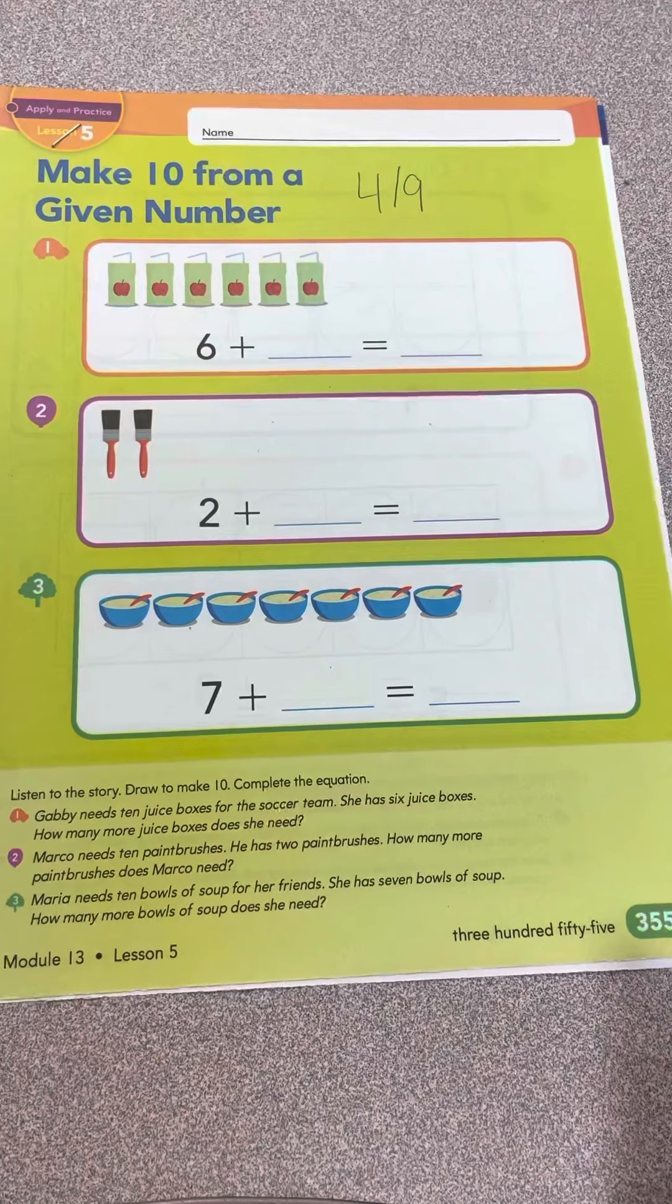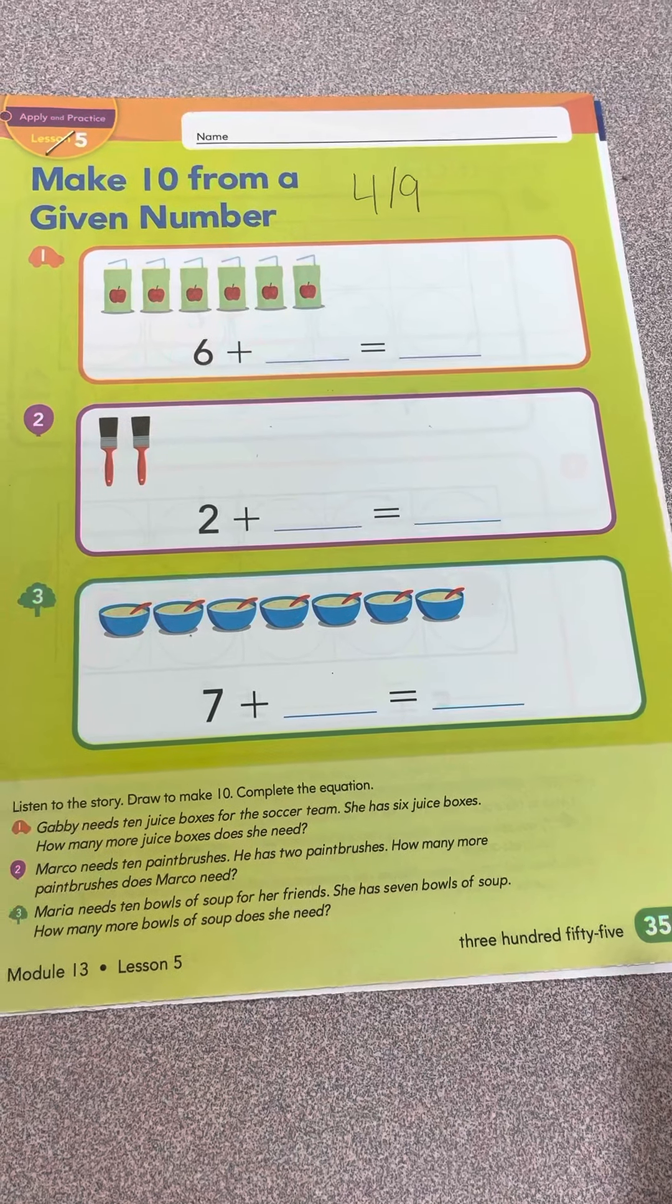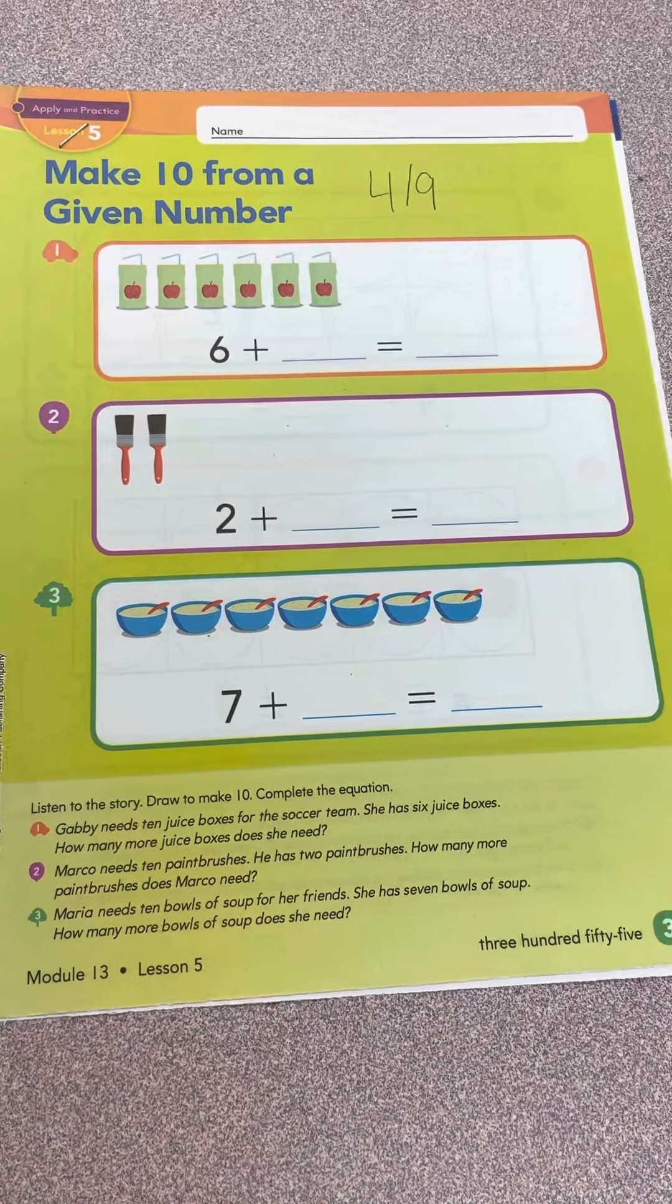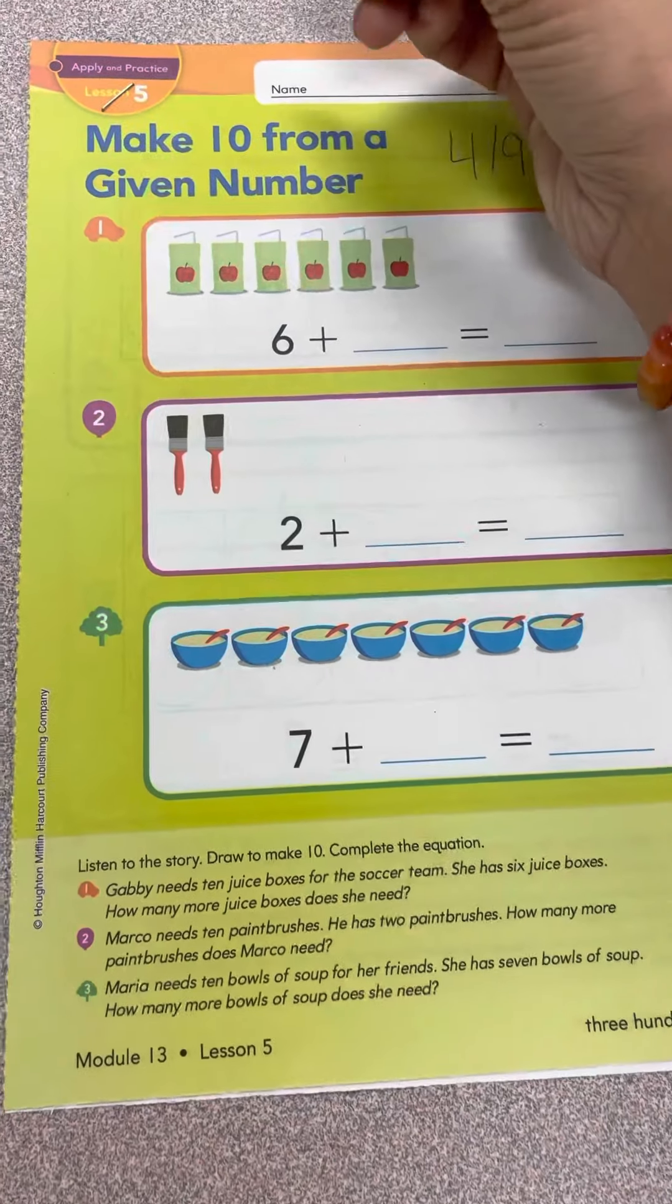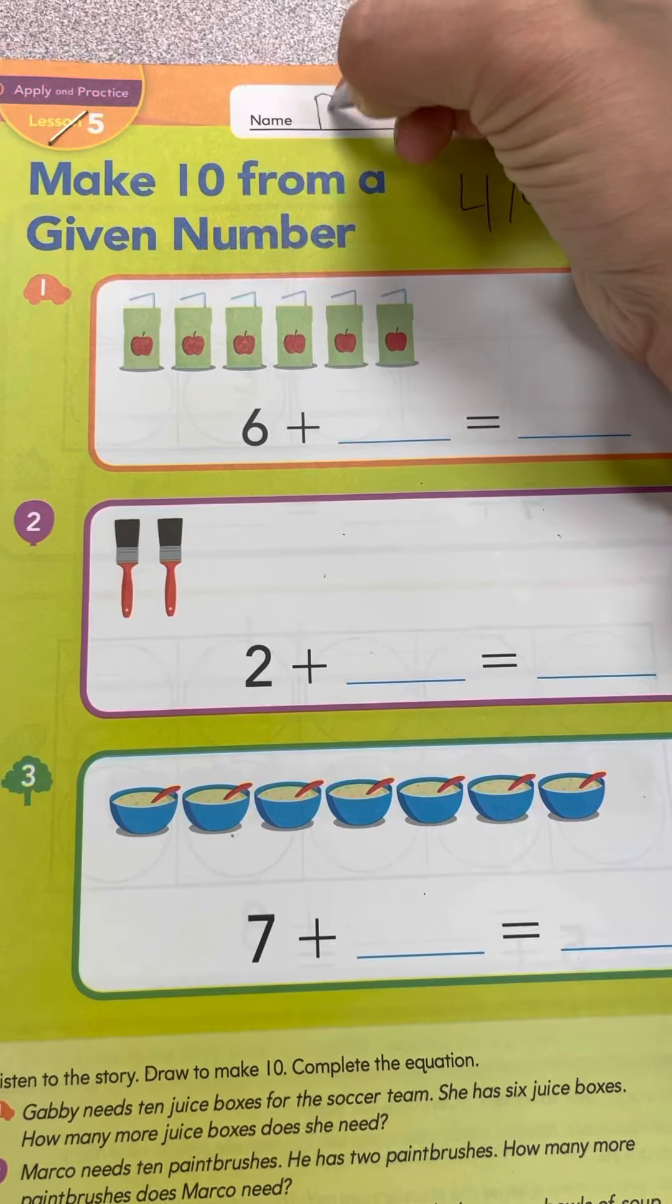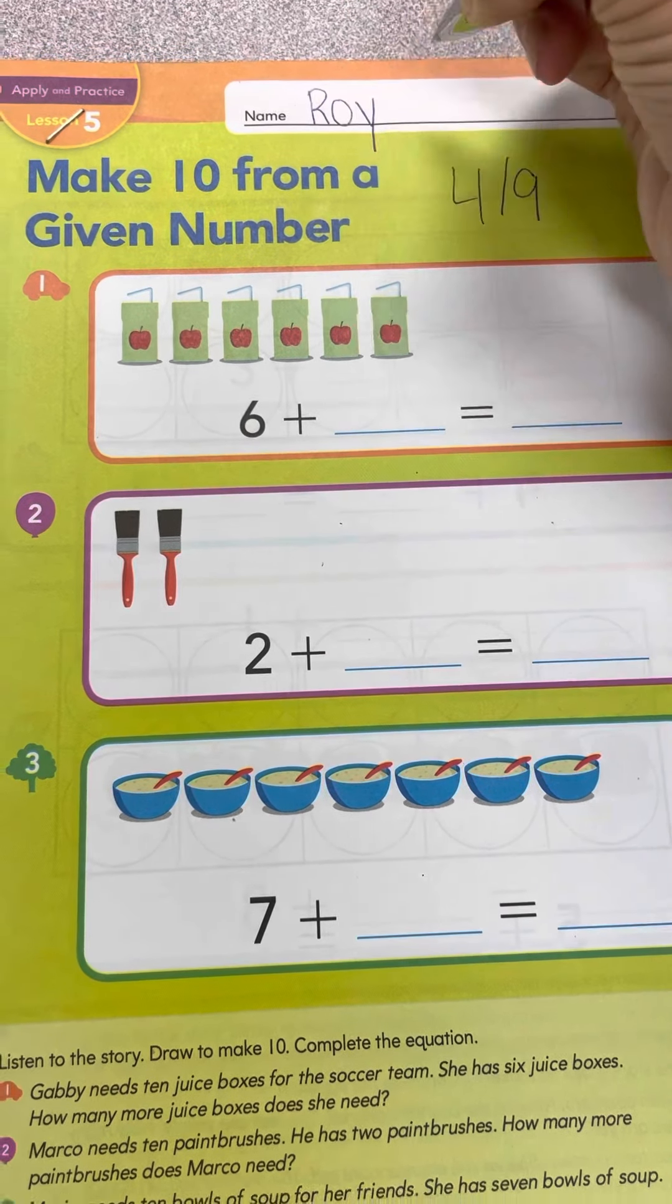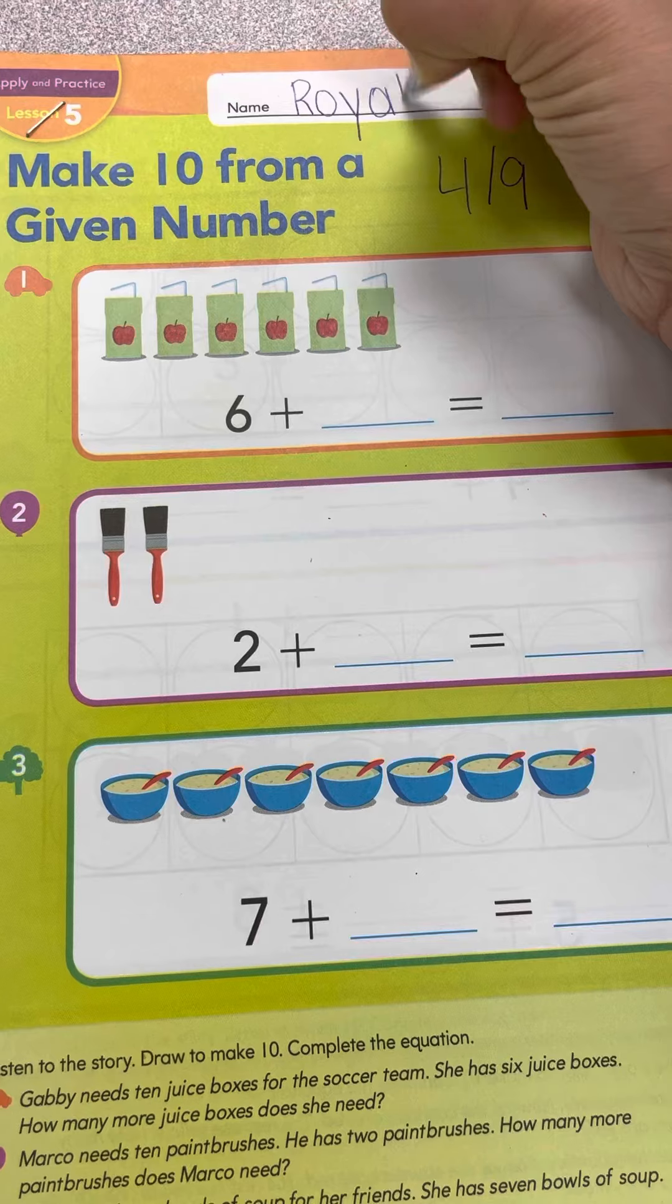You know the first thing you do is always the same. You take out your pencil and write your name. Today I am going to write Royal Fairley's name.